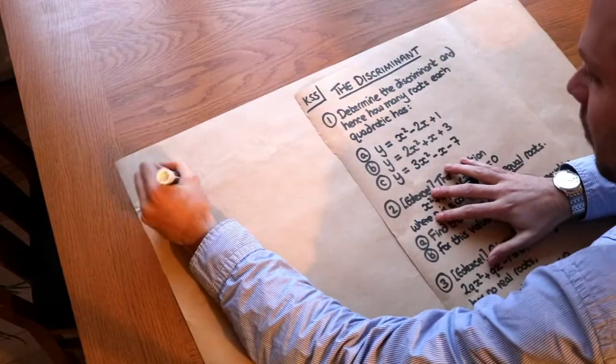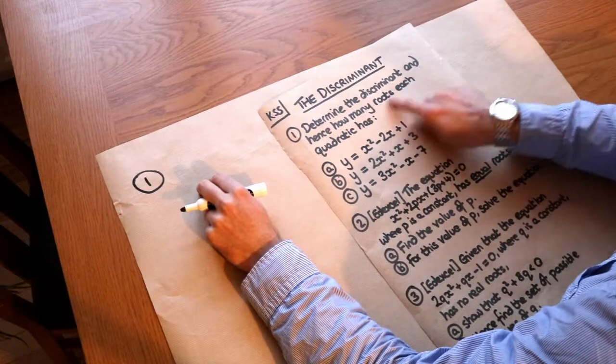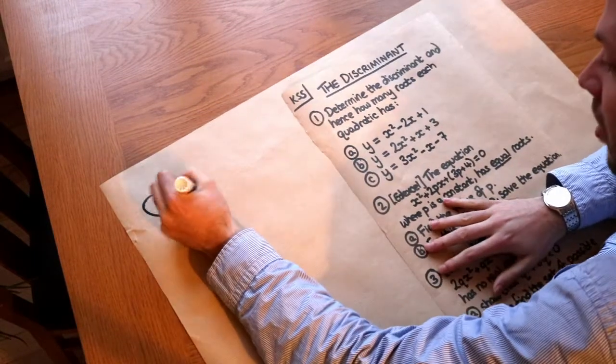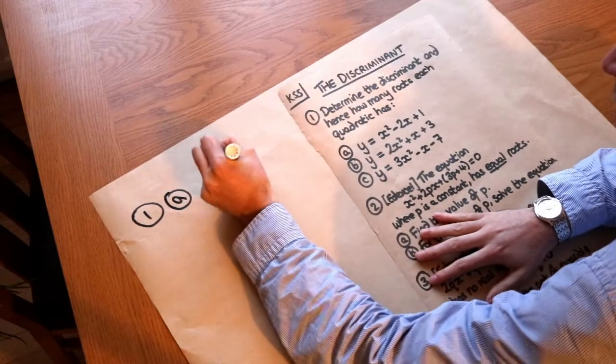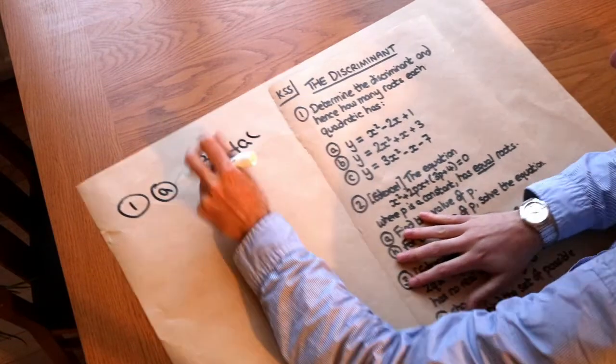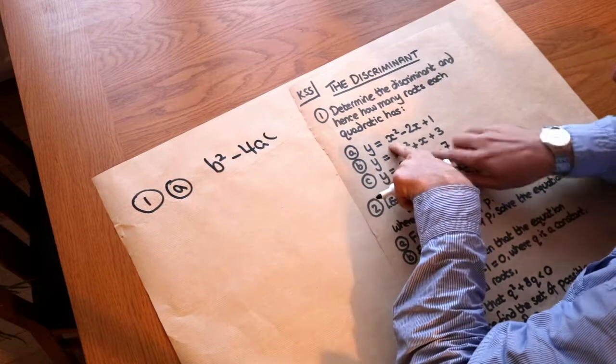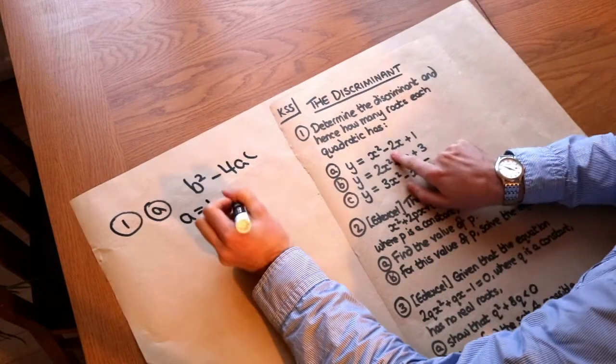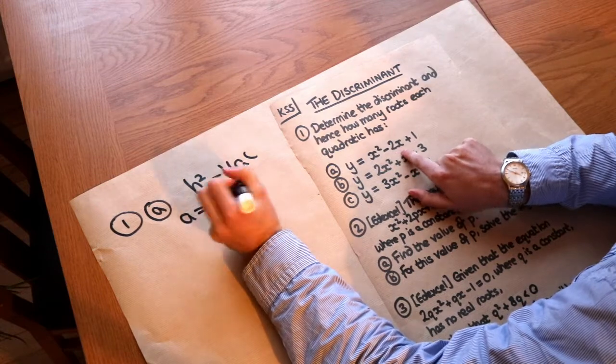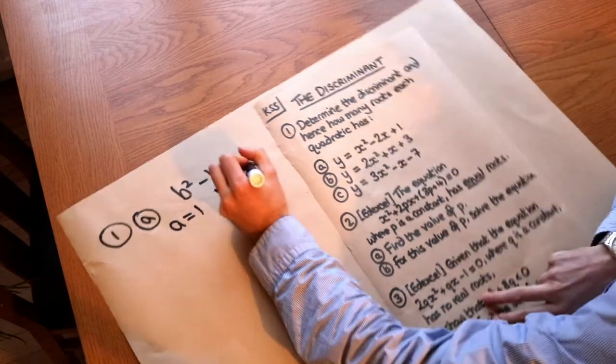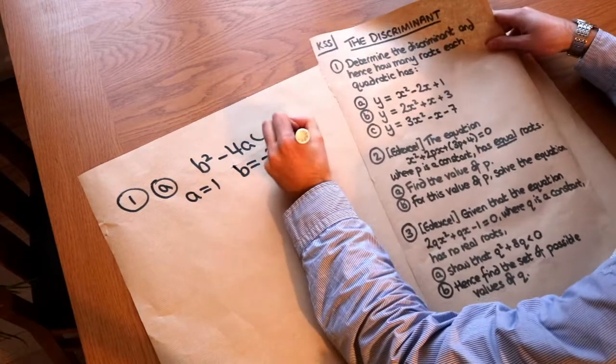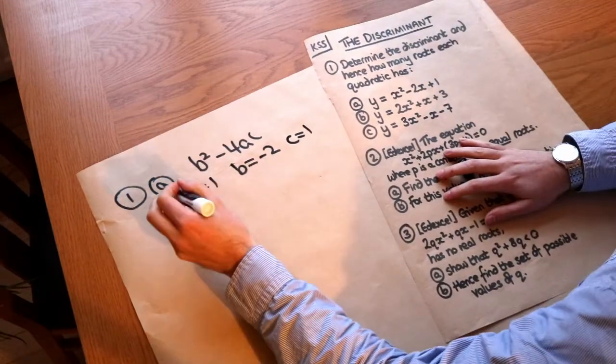Now let's solve some quick problems to do with this. We want to determine the discriminant, and hence how many roots each of these quadratics has. So for part a, if we calculate b² - 4ac, well, in this case, the a is the number in front of the x², so a = 1. The b is equal to the number in front of the -x, the coefficient of x, that's -2. And the c is the constant term, the term without the x, that's the 1.